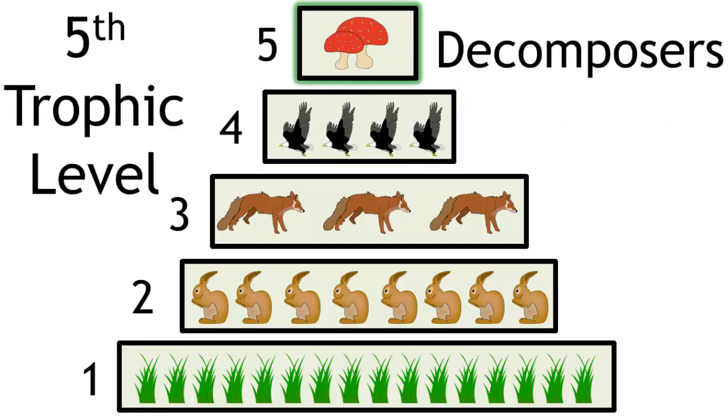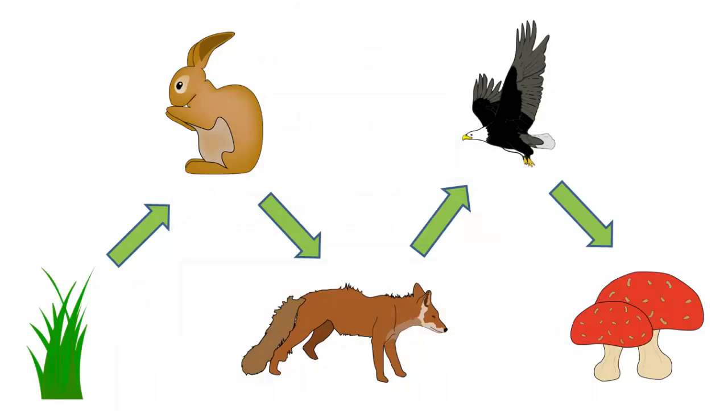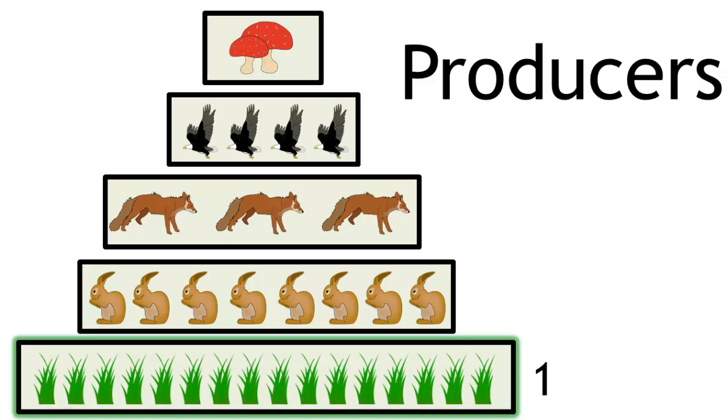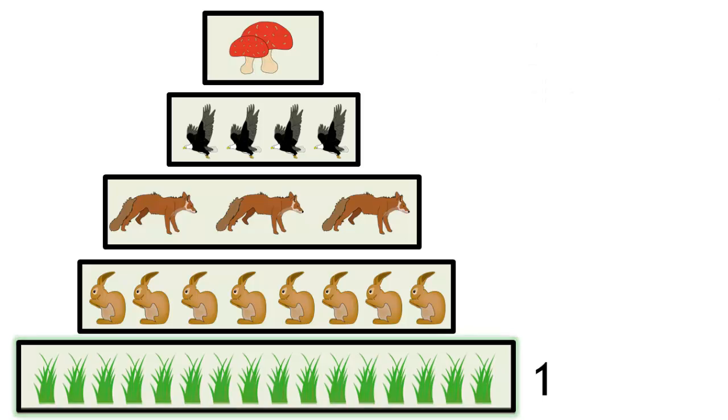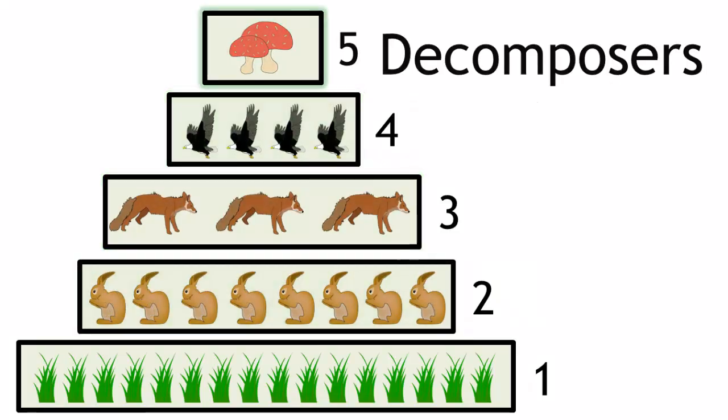We've included decomposers as trophic level 5, in this example it's the fungi. So to summarise, trophic levels are the number of steps an organism is within a food chain. The first trophic level is usually the green plants, the producers. And as you go up a trophic level and you go along a food chain of an ecosystem, you move on to the consumers, and finally the decomposers.